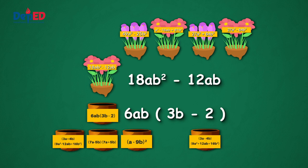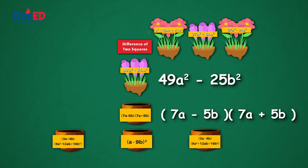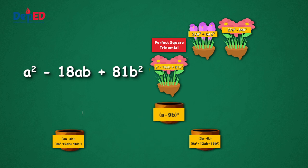How about 49A squared minus 25B squared? This is a difference of two squares, and it is a product of 7A minus 5B and 7A plus 5B. Let us have A squared minus 18AB plus 81B squared. What type of polynomial is this? It is a perfect square trinomial, and its factored form is just the square of the quantity A minus 9B.